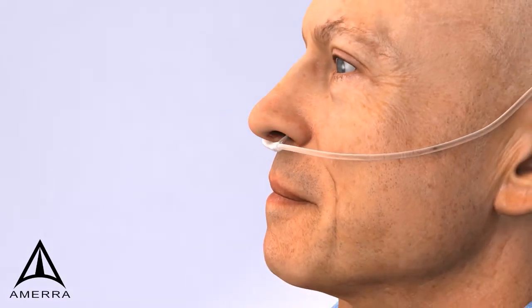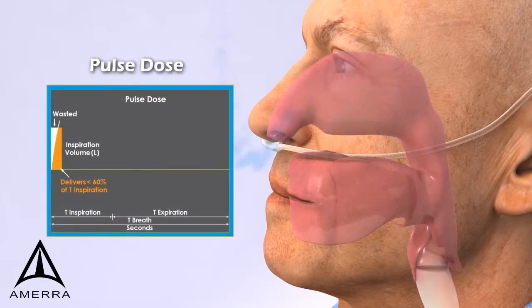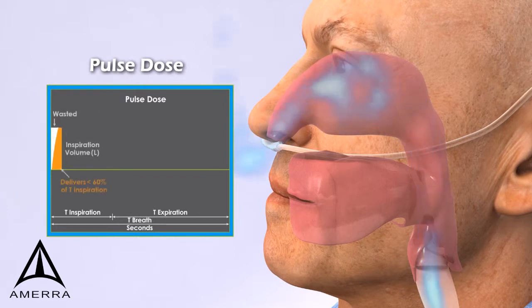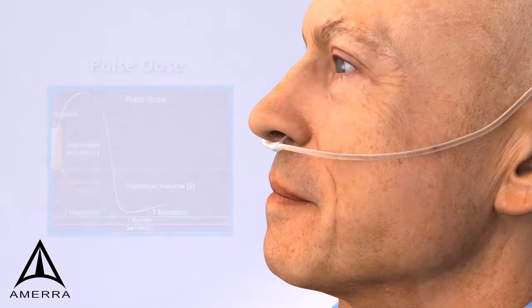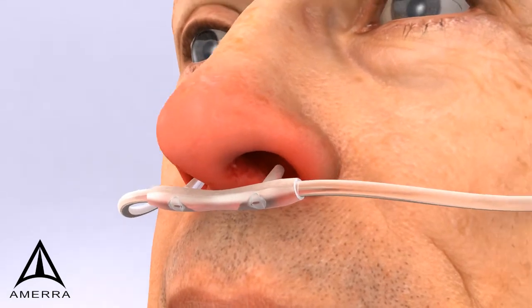The majority of portable concentrator systems utilize a pulse dose delivery. The patient triggers the pulse during inhalation. Similar to continuous flow, the bolus delivered by pulse dose systems exceeds the inhalation rate of most patients. As a result, the patient only receives a portion of the prescribed dose while the remainder is lost to retrograde flow. Similar to patients receiving continuous flow therapy, the effect of retrograde flow often causes nasal irritation and nose bleeding.